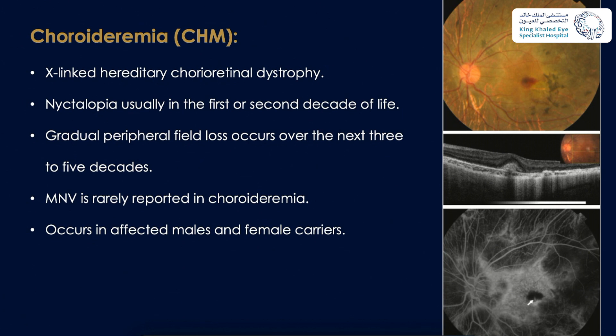Choroideremia is an X-linked hereditary chorioretinal dystrophy. Patients have nyctalopia usually in the first or second decade of life, with gradual peripheral vision loss over the next three to five decades. Macular neovascularization is rarely reported in choroideremia but can occur in affected males and in female carriers.